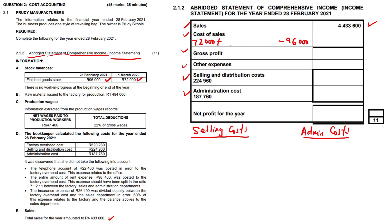The production figure comes from the earlier calculation for cost of sales, which was an amount of 2,795,000 rands. When we bring these three figures together we arrive at 2,771,000 net. Arriving at the gross profit: sales less cost of sales, 4,433,600 minus 2,771,000, leaves us with 1,662,600.